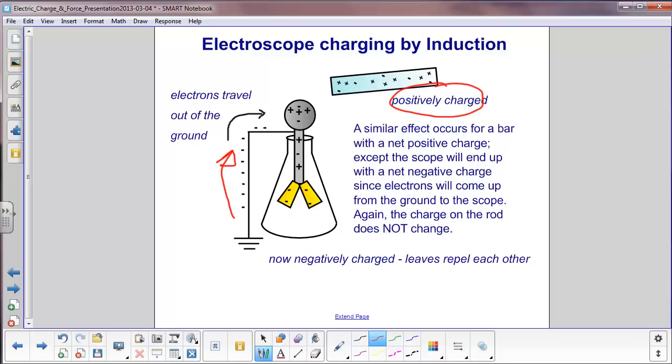Remember, the earth has an infinite source of electrons and it can either accept them or donate them. In this case, they travel up out of the ground, spread out on the electroscope. You now have negative charges here at the bottom. They will still repel. And again, the charge on the rod does not change.